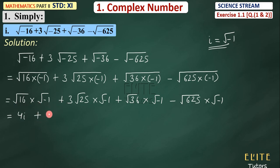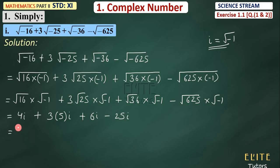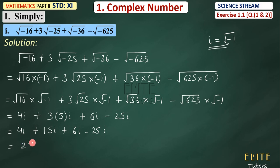Then: √16 = 4, so we get 4i. Plus 3 × √25 = 3 × 5, so 15i. Then plus √36 = 6, so 6i. Then minus √625 = 25, so minus 25i. Now solving: 15i + 4i = 19i, then 19i + 6i = 25i, and then 25i − 25i = 0. So the answer is 0.